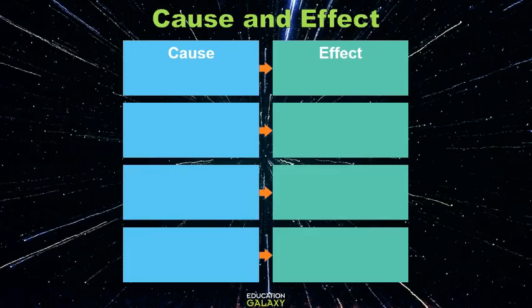One way is through cause and effect. Authors use this structure to show causes and effects. They use some keywords to show cause. For example, because, why, the reason.